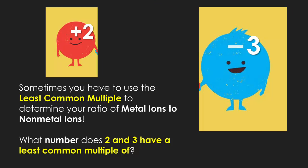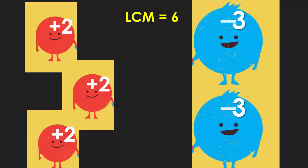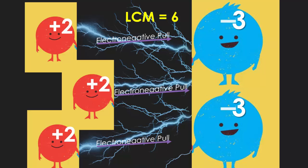Sometimes you have to use the least common multiple to determine your ratio of metal ions to nonmetal ions. Here is a scenario where we have a positive two cation and a negative three anion. What do two and three have least in common? Six. So if we're shooting for six, and every cation has a positive two charge, you would need three cations. For the anion with a negative three charge, you would need two. So you have three atoms of the positive two cation and two atoms of the negative three anion. A positive six plus a negative six equals zero — everything is electrically neutral.